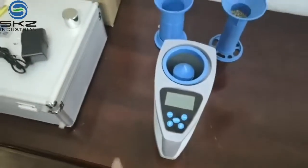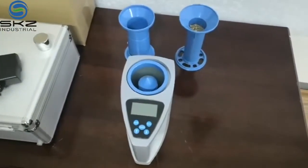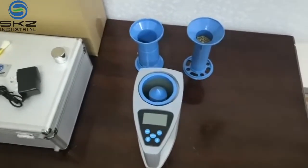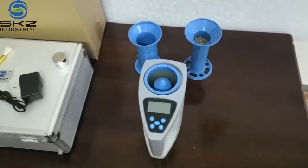This moisture meter can measure 33 types of material including coffee bean, fava bean, and others. The next step is to show how to operate it.